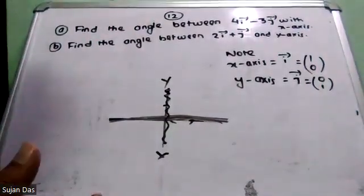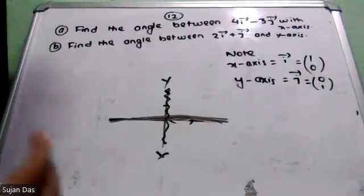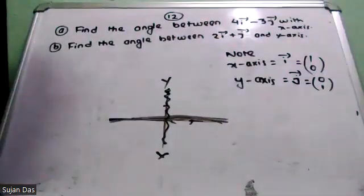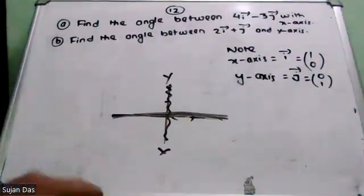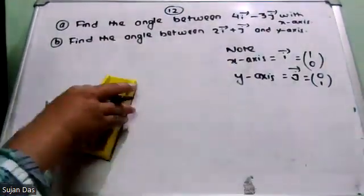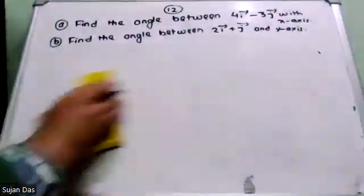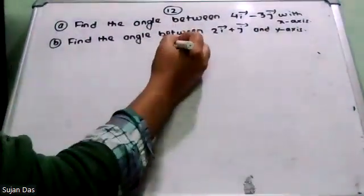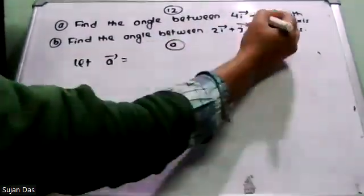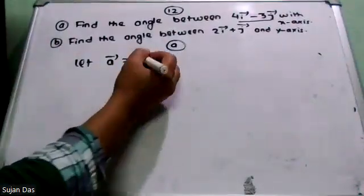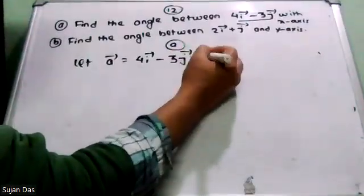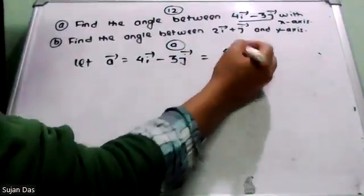Coming to the formula — for the y-axis the x-component is zero. Remember: x-axis unit vector is (1, 0) and y-axis unit vector is (0, 1). So, let vector A be the given vector — suppose vector A is 4i minus 3j, meaning components (4, -3).